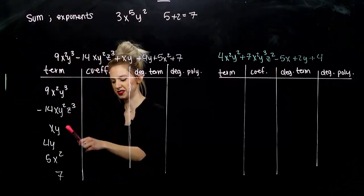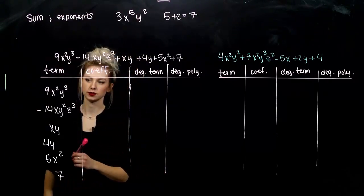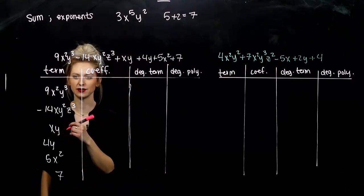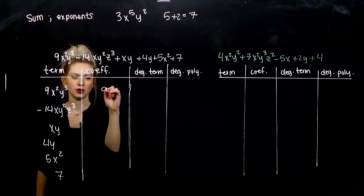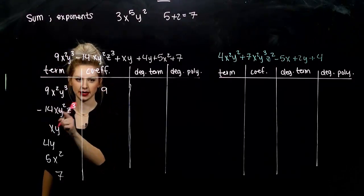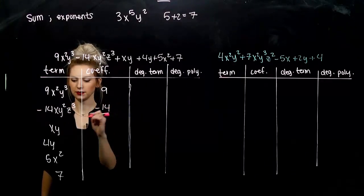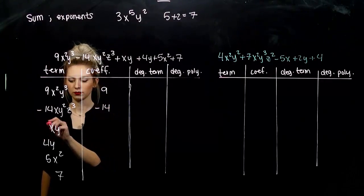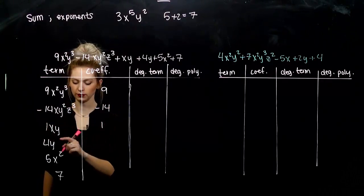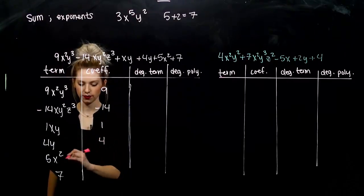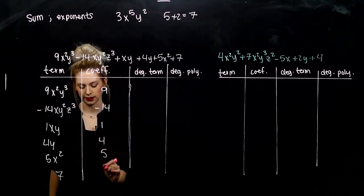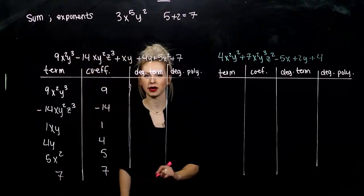So on each of these pieces, what is the coefficient? So the thing out on the front, the constant on the front of the variables. So the first one, coefficient 9. Second, negative 14. Third, unspoken 1 out on the front. Fourth is 4, fifth is 5, that's kind of cool. And the sixth is 7. Oops, threw out the pattern.